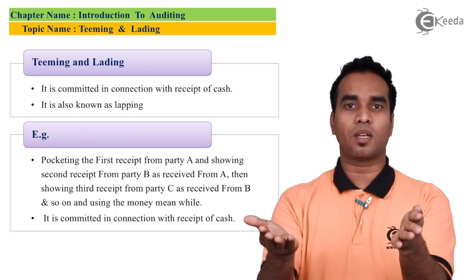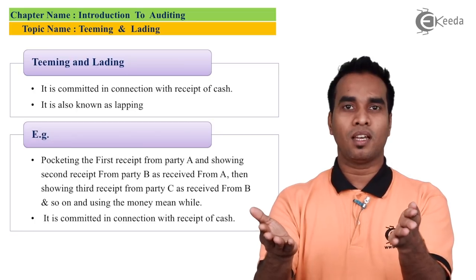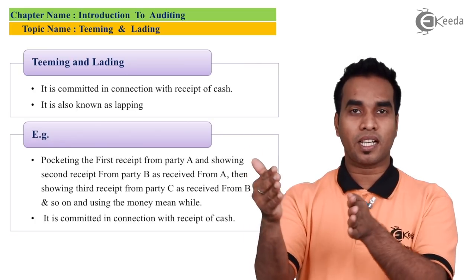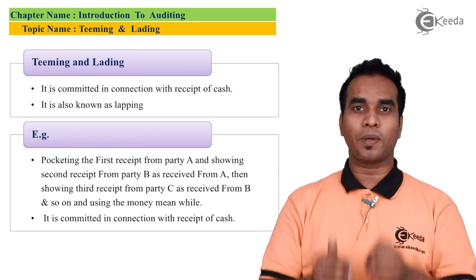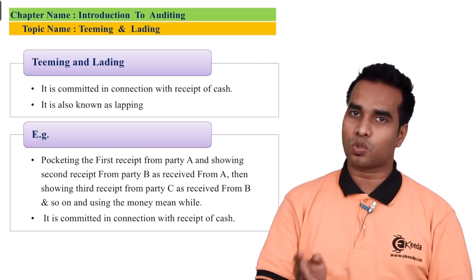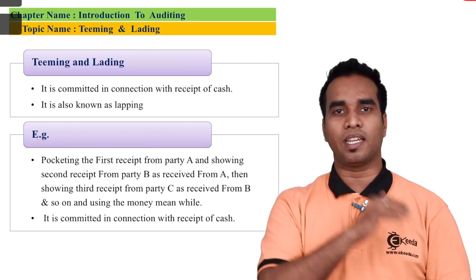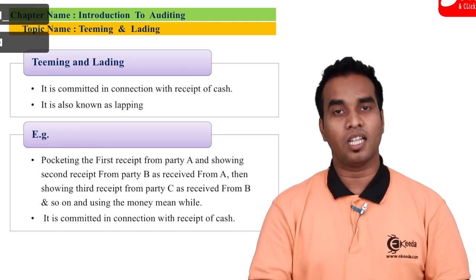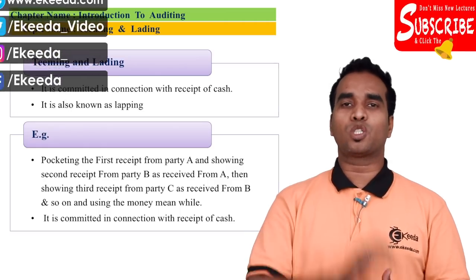It could be any amount — 100, 500, or more. For a certain period, the employee uses the money for personal purposes. We call this teaming and leading. It is also known as lapping.